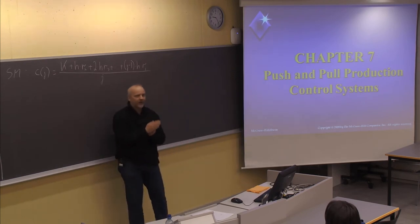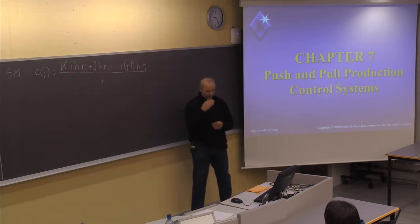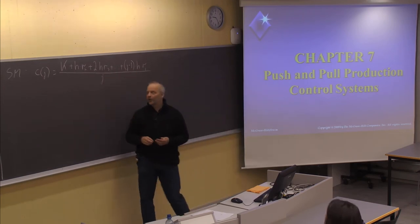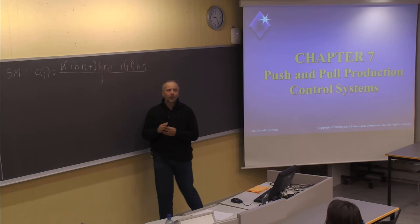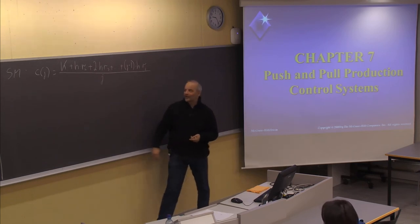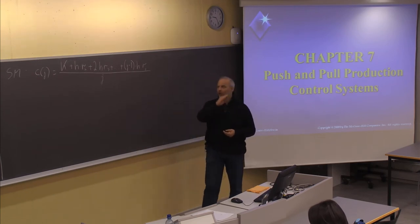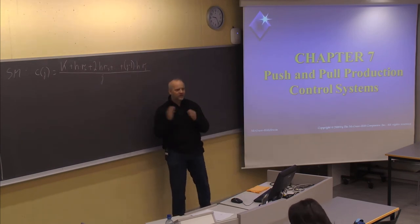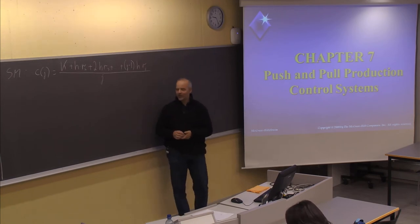In the Silver Meal method, we start by looking one period ahead and calculate the cost for one period. Then we consider two periods, find the average cost per period, and compare it with the previous value. If the cost is smaller, we continue to three periods and compare again. When the average cost starts to increase, we stop and conclude we should produce for the previous number of periods, then start a new production in the current period and begin the process over again.